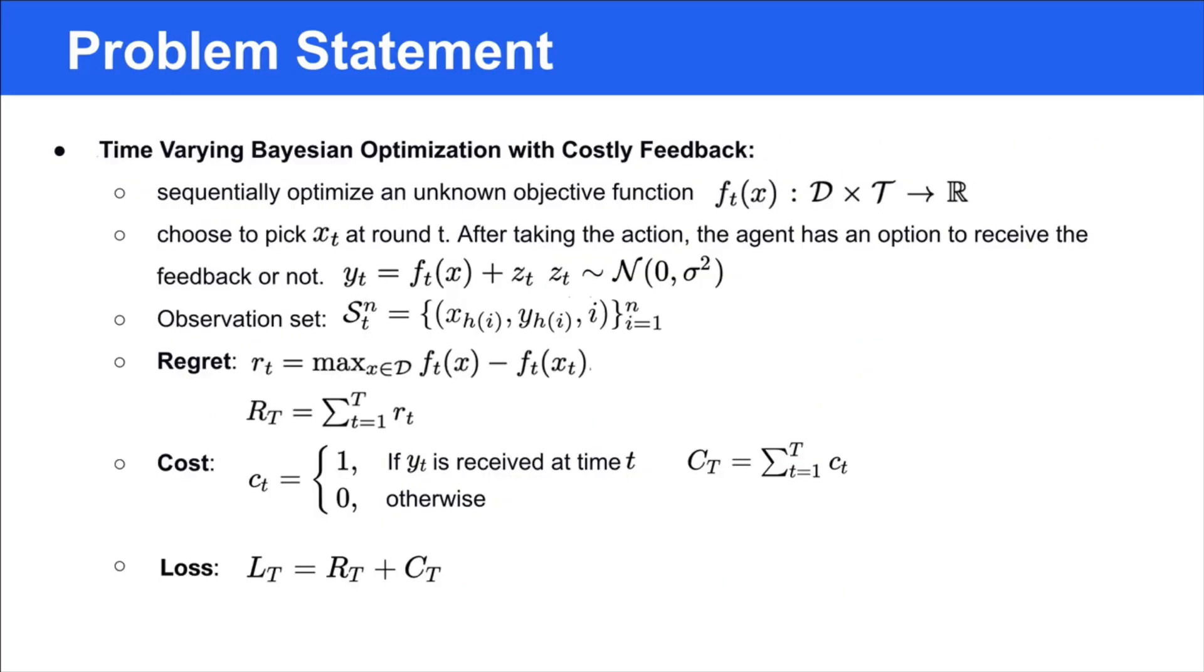More specifically, the detailed formulation is given in this slide. We want to optimize an unknown objective function. At each iteration, the agent picks one position. After selecting the point, it has an option to decide whether to query the feedback. If it decides to see the reward, then it receives a noisy observation and a cost is required to be paid. The observation set contains all the pairs and records the time steps for observing the data.